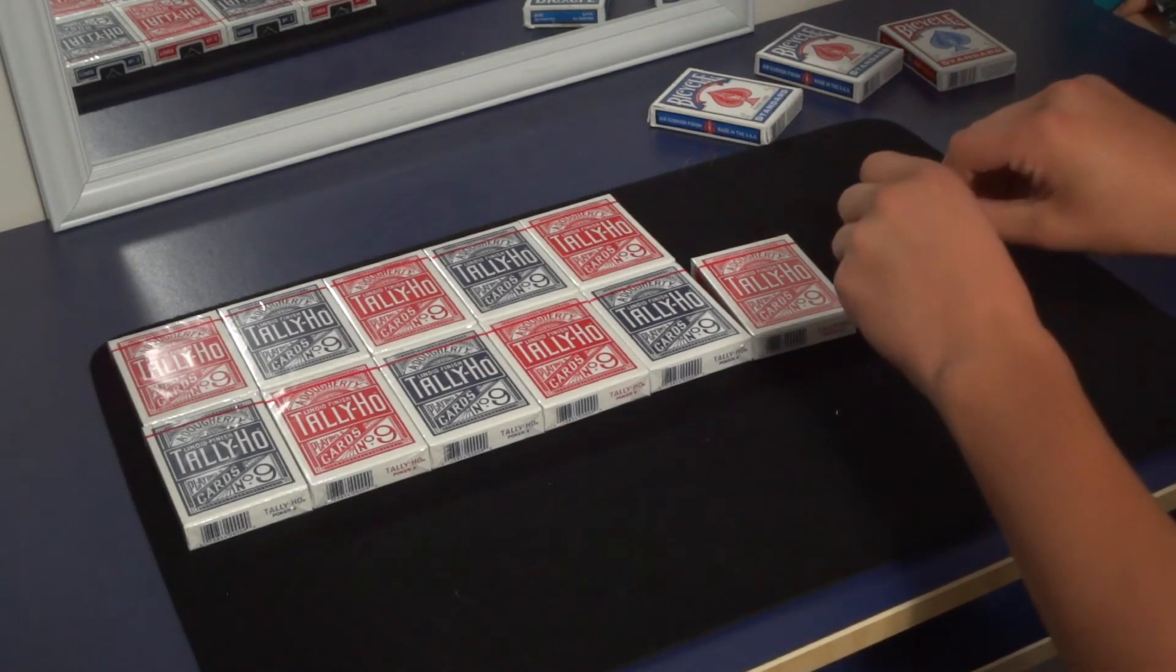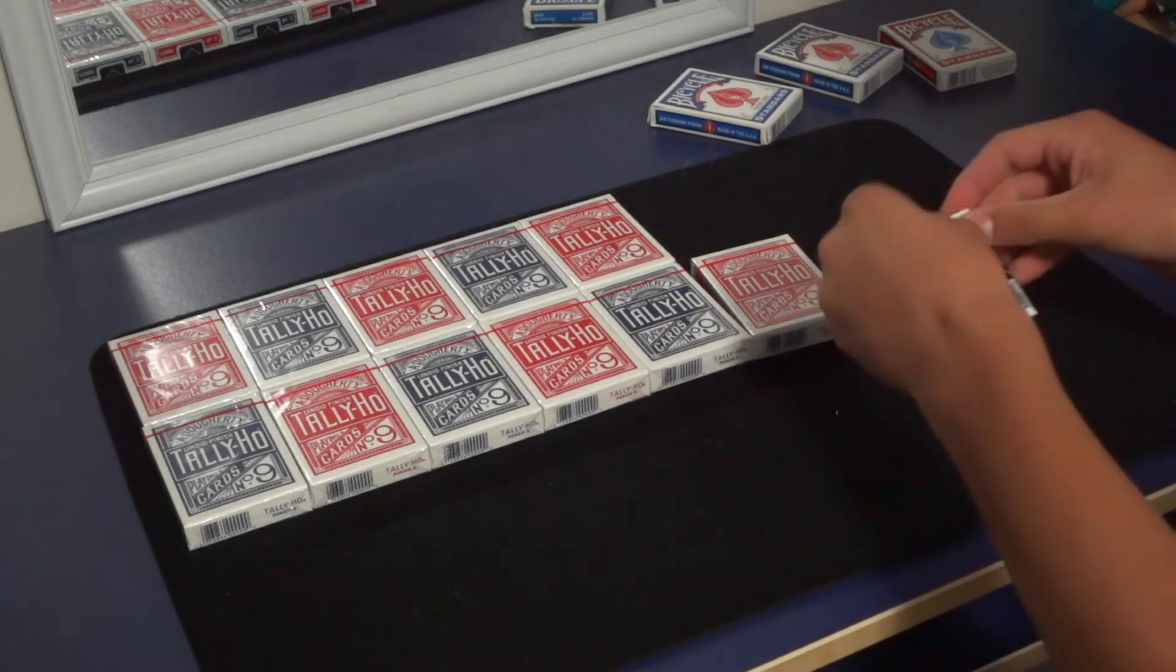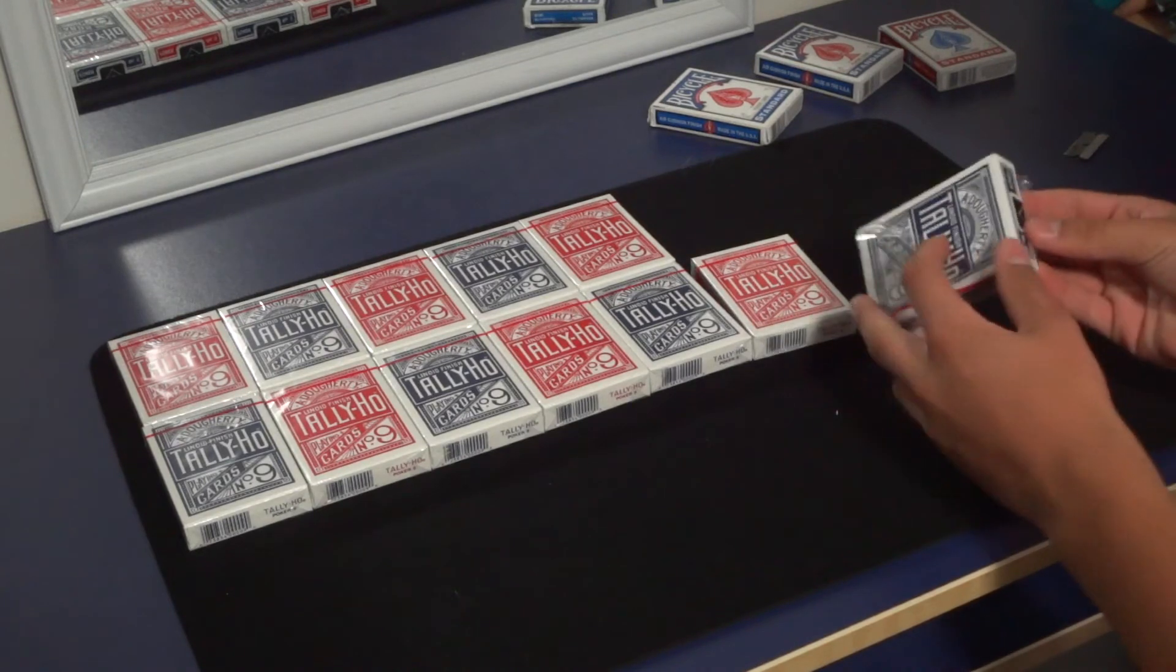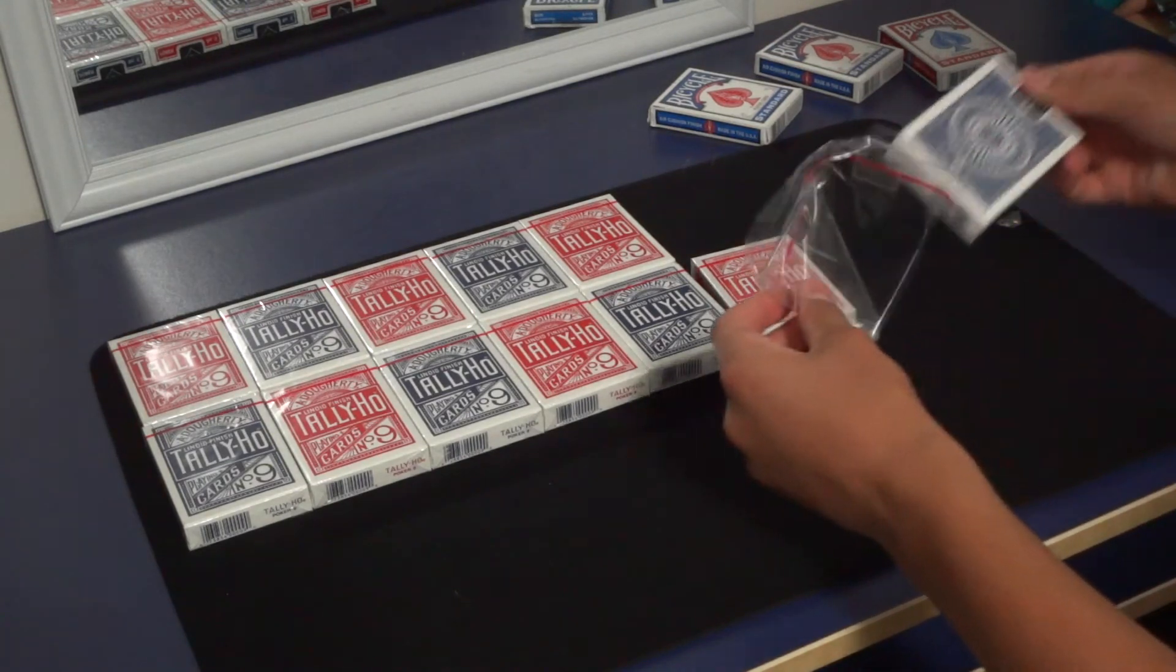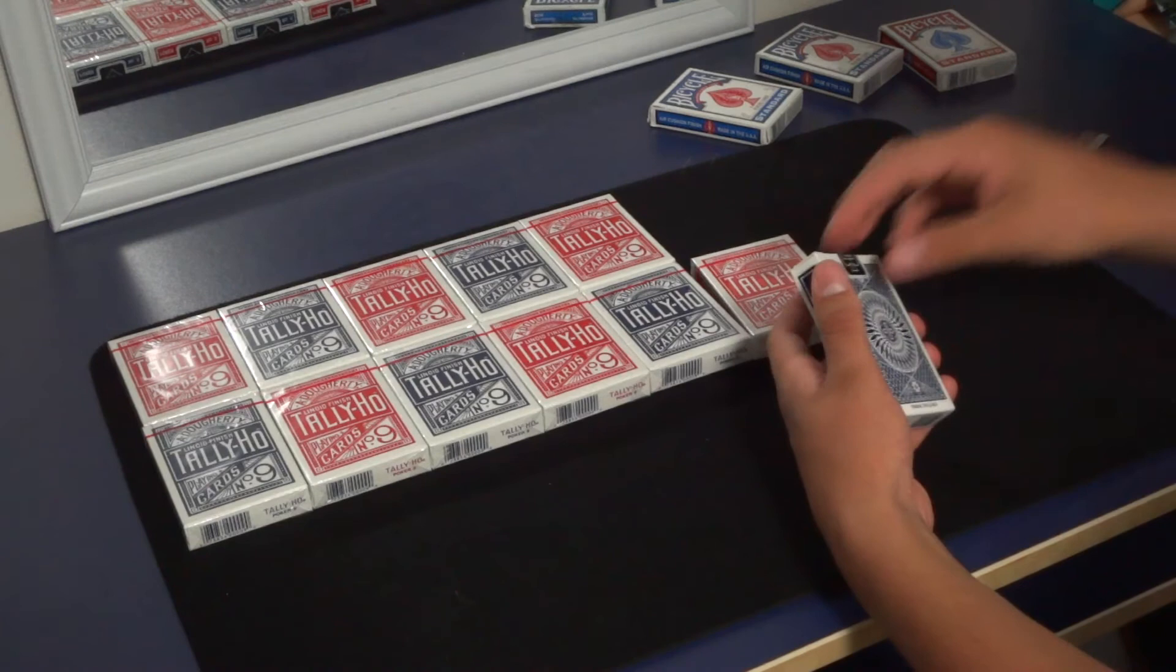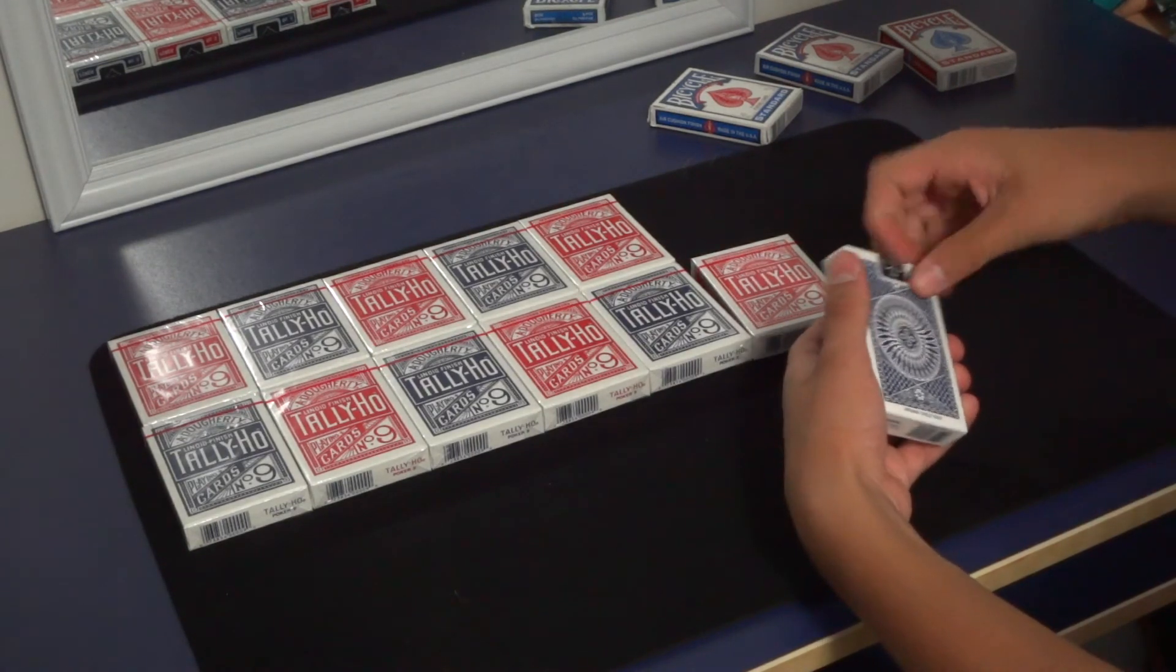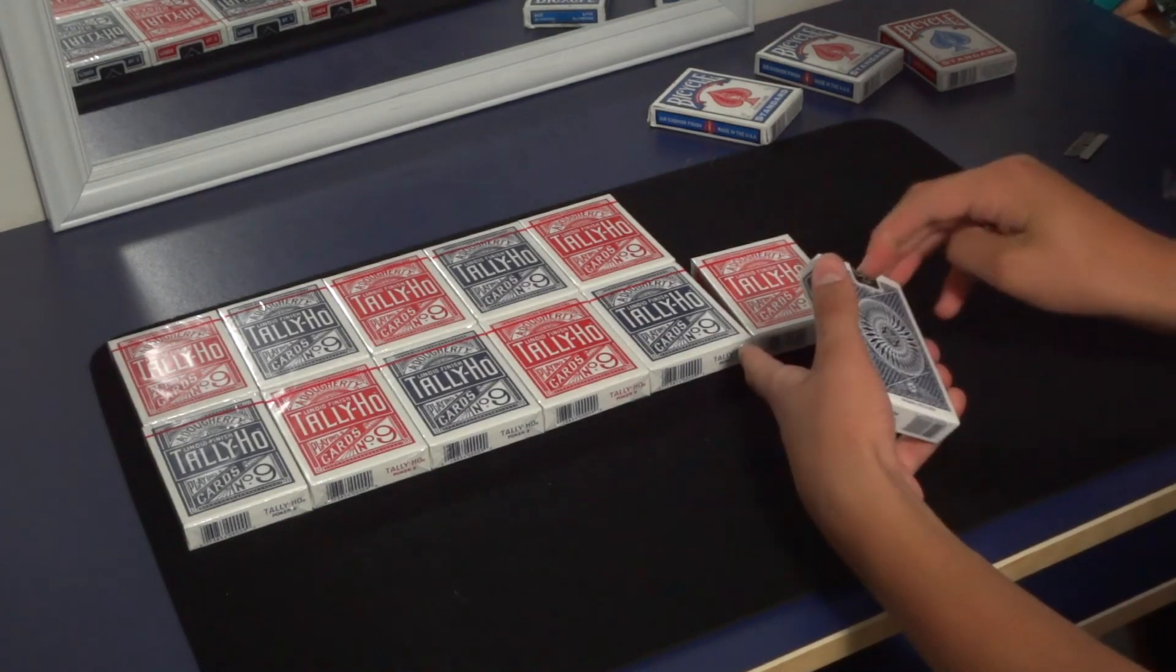Imagine you won the contest. I mail you a deck of circle back Tally Ho cards. You get the cellophane off. Oh, oh. It is mounting. You break the seal.